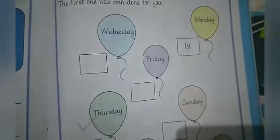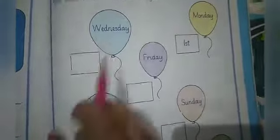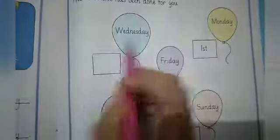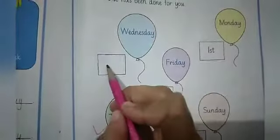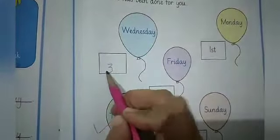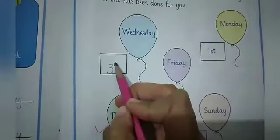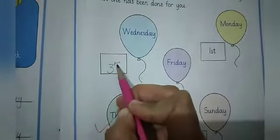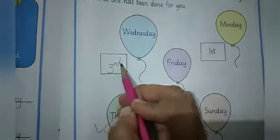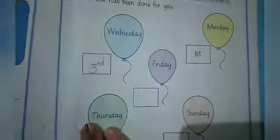Next is Wednesday. Wednesday is the third day of the week, so we write 3 next to Wednesday.